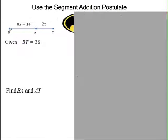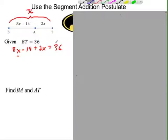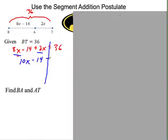The segment addition postulate is this example. If given BT is 36, so BA is this chunk, AT is 2x, the whole thing, this bracket means everything is 36. So can we set up an equation to show this? Sure. We're going to say this chunk plus this chunk is the whole thing. So 8x minus 14 plus 2x equals 36. And now it's a matter of solving this equation. We're going to practice solving a lot of equations this time.